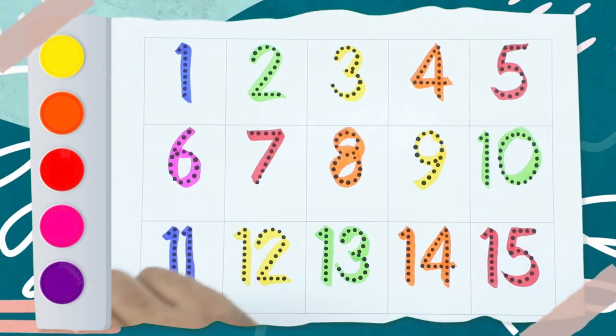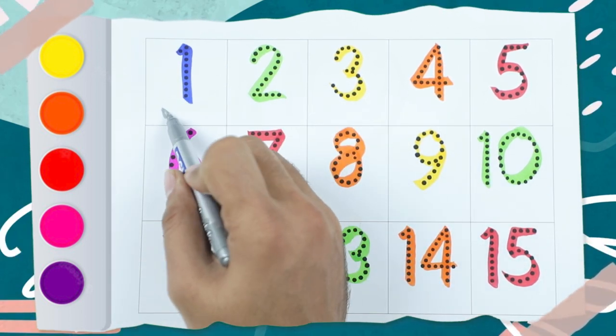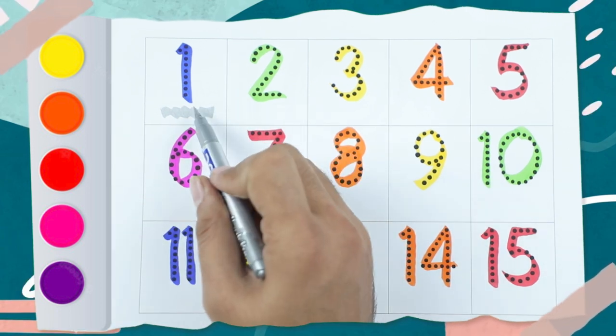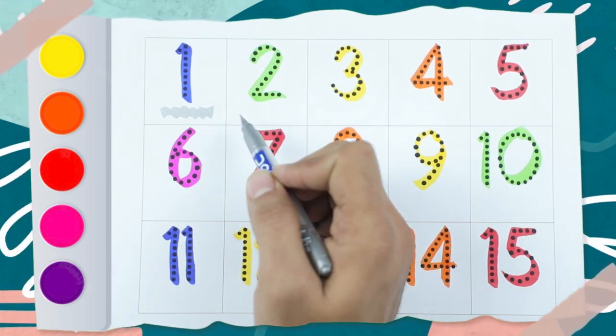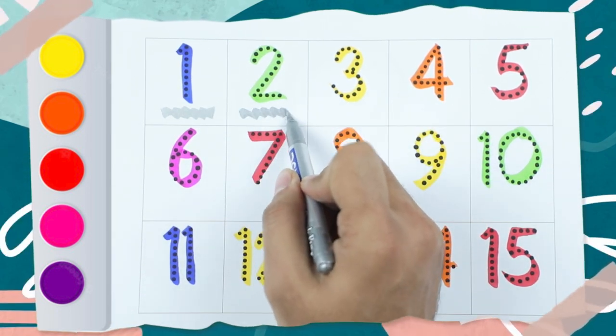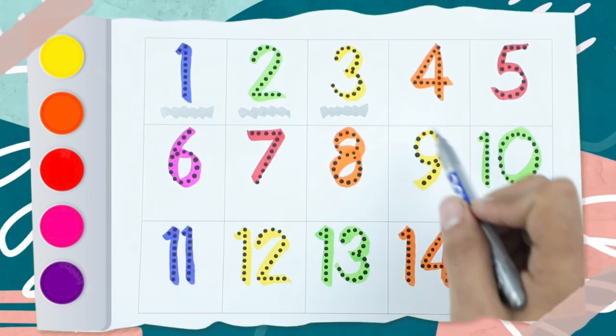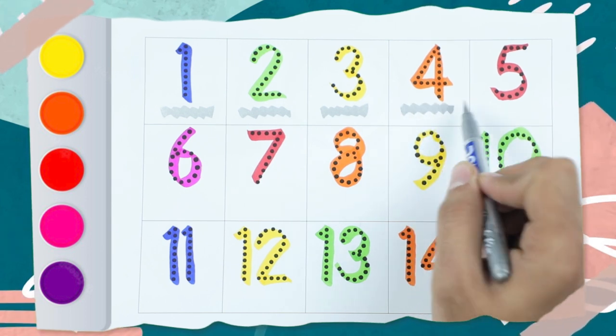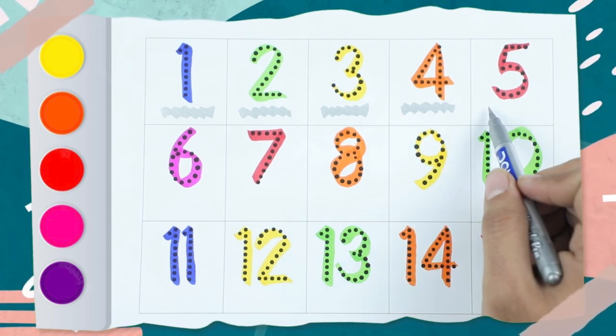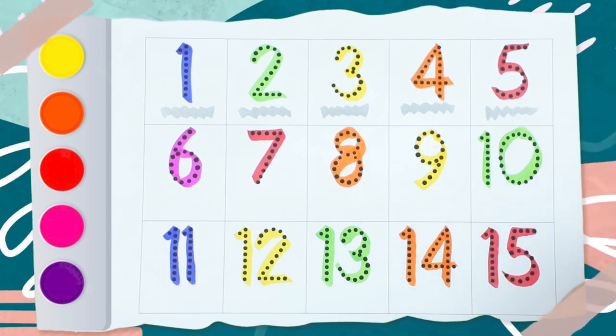Which number is this? 1 and color is blue. 1 number blue color, 2 number green color, 3 number yellow color, 4 number orange color and 5 number is red.